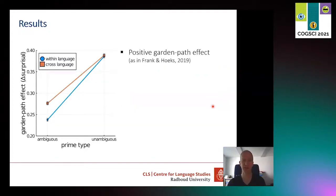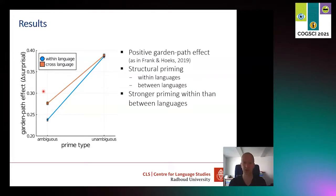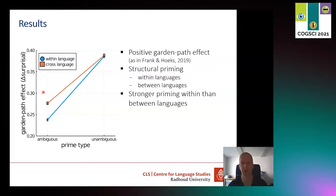What do we find? First of all, there is a garden path effect — but we already knew that, at least for Dutch. There is clearly a structural priming effect: after an unambiguous prime, the garden path effect is much stronger than after an ambiguous prime. And this works both within language and between languages. It is actually a bit stronger within than between languages, which matches the modeling results of Yongku and also most of the human experiments. Most studies show that between-language priming is a bit weaker than within-language priming.